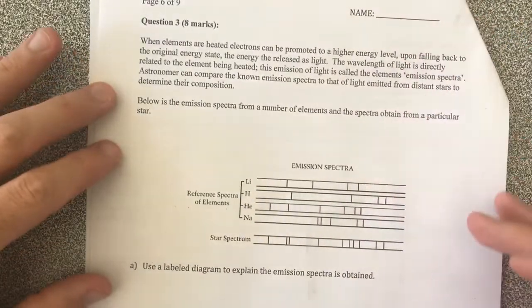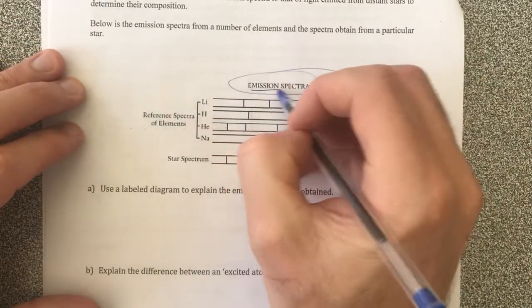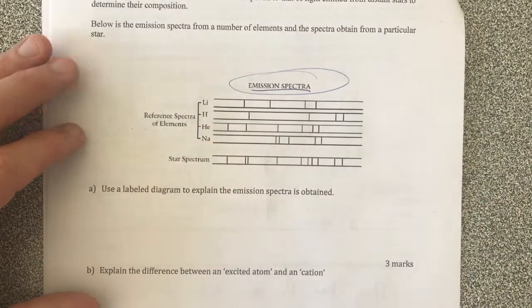So here we have the third question and looking at this, I'm going straight to the diagram. What is this diagram talking about? It's talking about emission spectra.